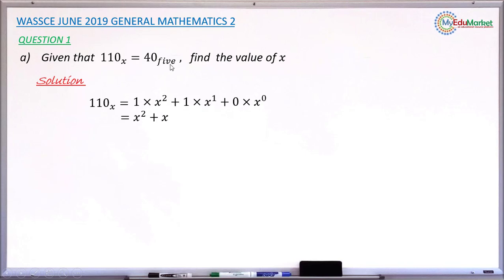Next, you take the next number, that is 40 which is in base 5. Convert it also to base 10. So you take 4 multiplied by 5 raised to the power of 1, plus the next digit which is 0, multiplied by 5 raised to the power of 0.